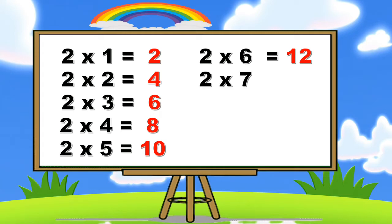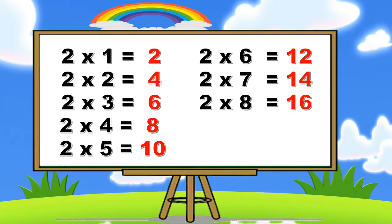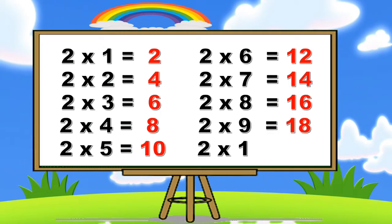Two sevens are fourteen. Two eights are sixteen. Two nines are eighteen. Two tens are twenty.